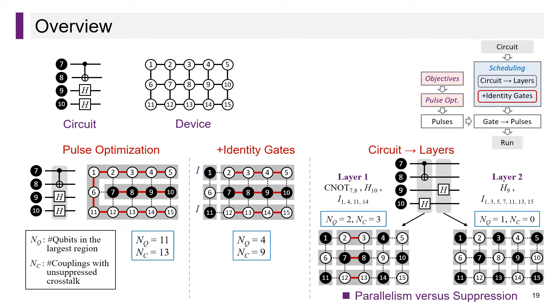The second strategy is to partition a circuit into multiple layers. In this example, we partition the circuit into two layers. The first layer has a CNOT gate on qubits 7 and 8 and an H gate on qubit 10. The second layer has an H gate on qubit 9. After inserting identity gates, we can see that the metrics of each layer become smaller, which indicates better suppression. However, multiple layers reduce parallelism, and in practice we need to balance parallelism and suppression performance.